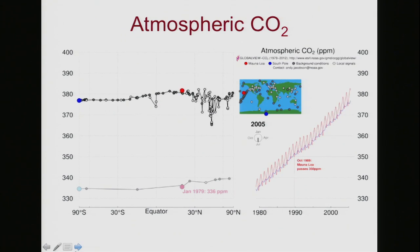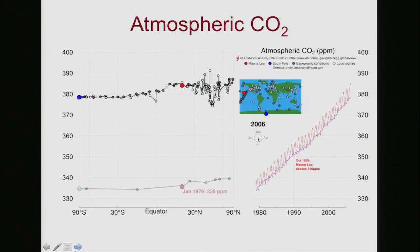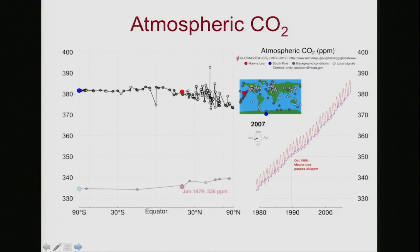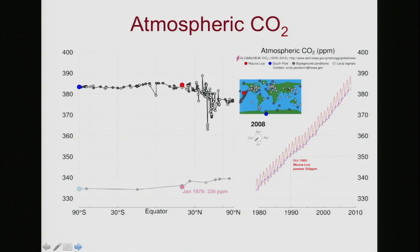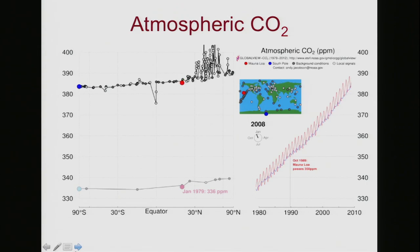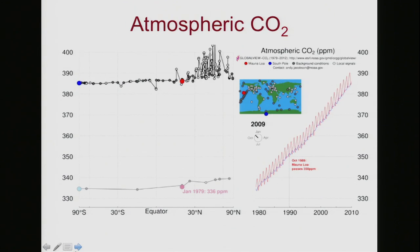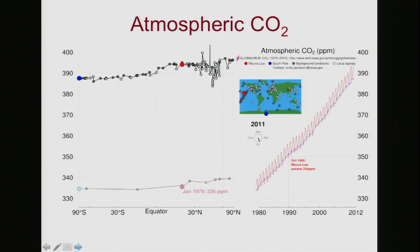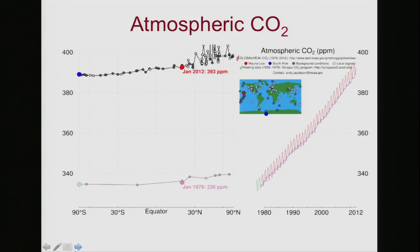We're getting some pretty wide swings from month to month, but the overall pattern is up and up. Notice how at the South Pole there's no industry, no plants — so that's just CO2 that's been escaping and moving all over the surface of the Earth. And we're going up to nearly 400 parts per million.